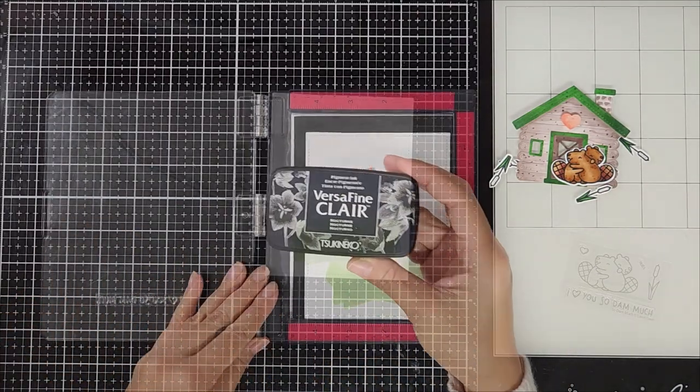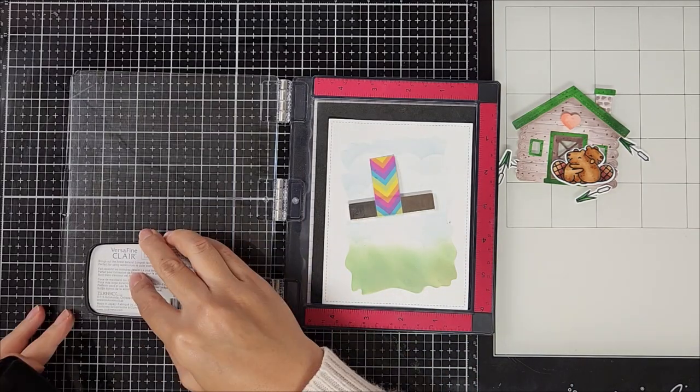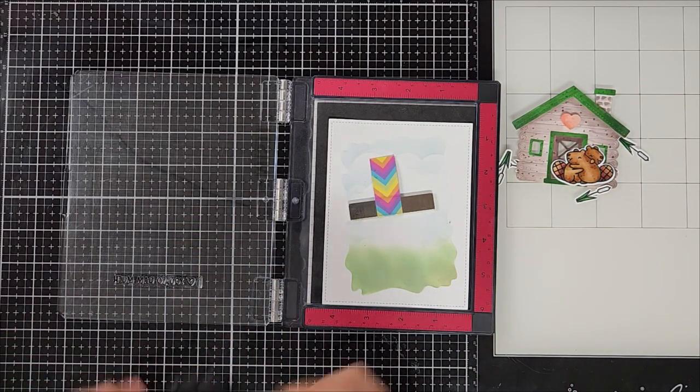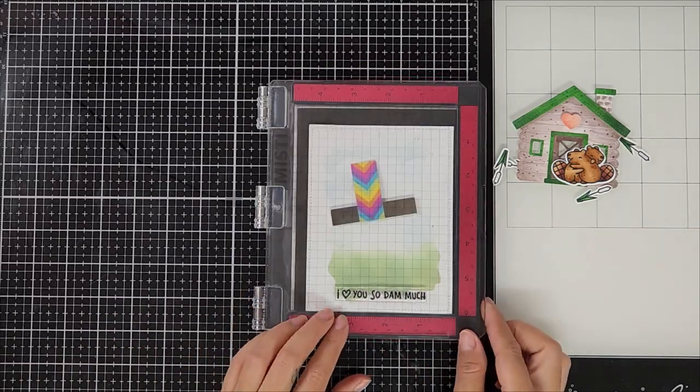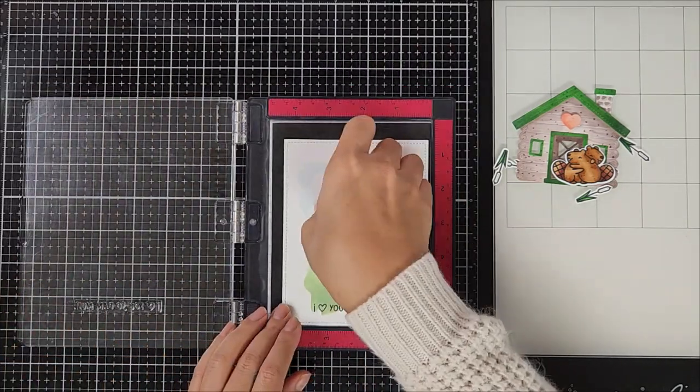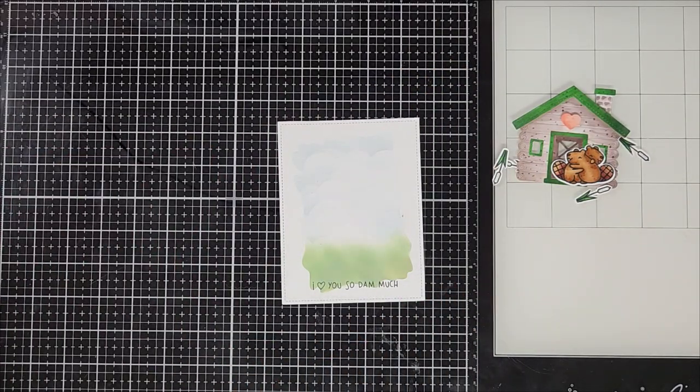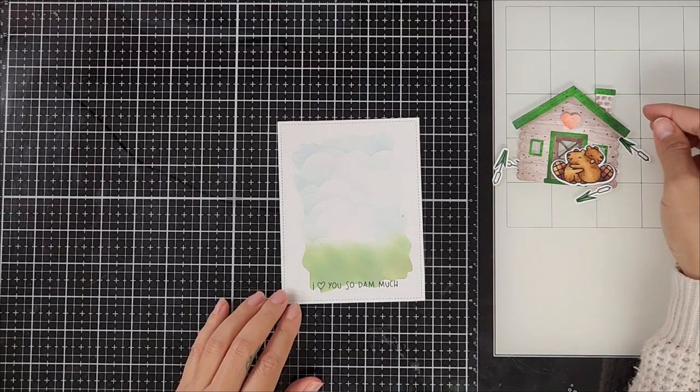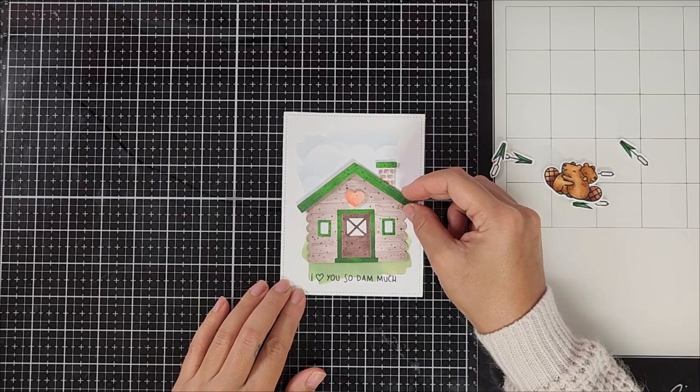So now for the sentiment, I'm going in with the sentiment from the stamp set and this one is just so cute. It says 'I love you so dam much' and I thought that was so adorable with the beavers. I went ahead and stamped that down with black ink.